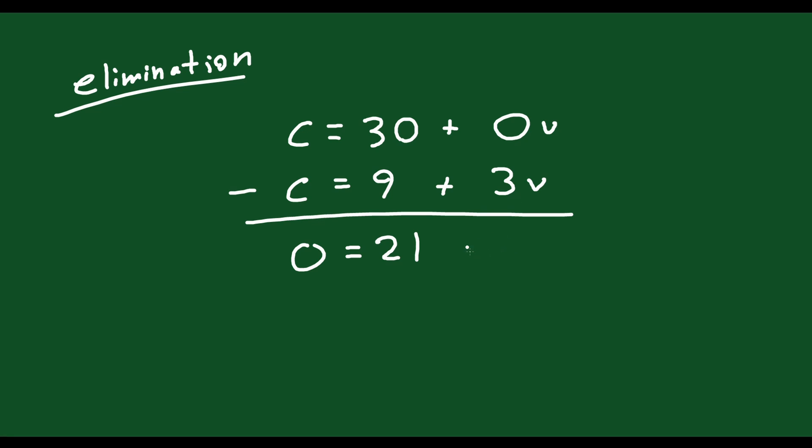30 minus 9 is 21. 0 minus 3V is minus 3V. So now what I have is 0 equals 21 minus 3V. Bring the 3V to the other side. Divide both sides by 3. V is equal to 7. You get the exact same answer you get using substitution.